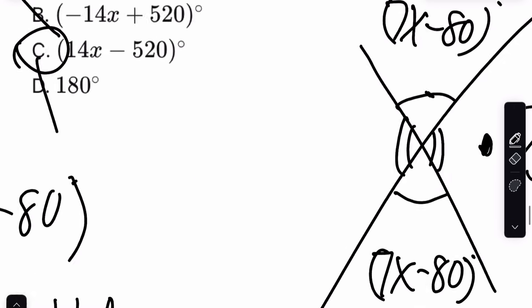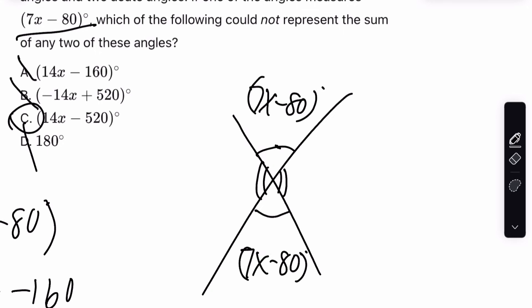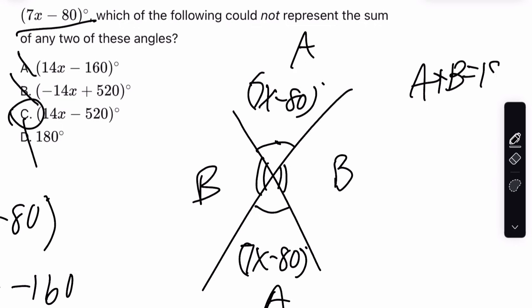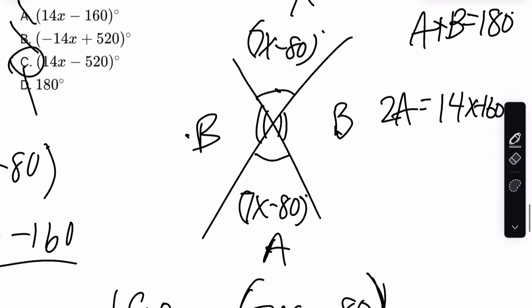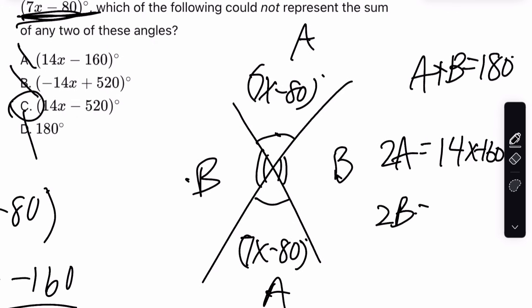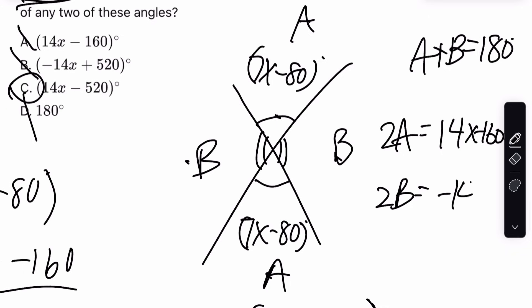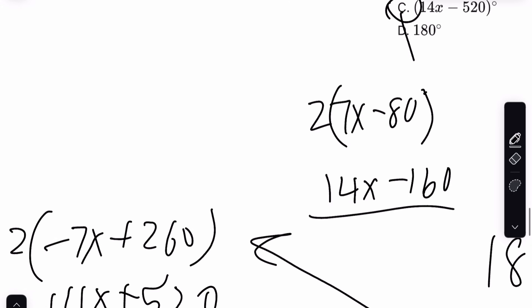So if you're looking for a simple explanation for why C is the answer, if we label this angle A and angle B, then this would be angle B and angle A, right? And angle A plus B is always going to be 180, no matter what A or B you select. 2A is going to equal 14x minus 160, because A is 7x minus 80. 2B is going to equal negative 14x plus 520, because B is negative 7x plus 260. There is no possible way to add A and B or A and A or B and B to get 14x plus 520.